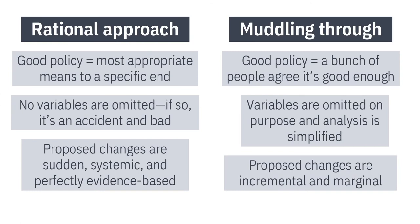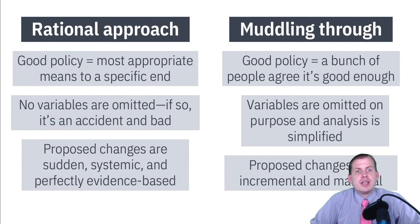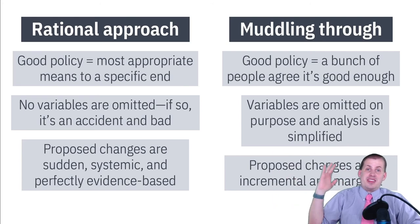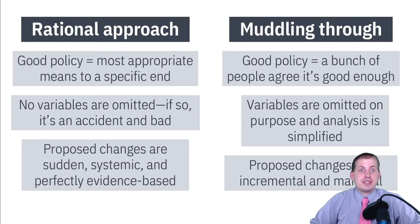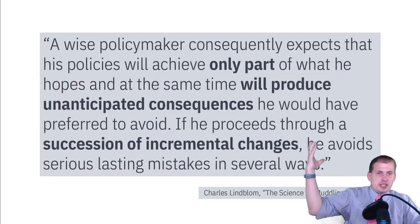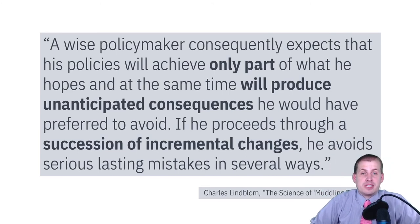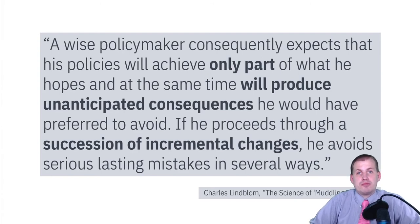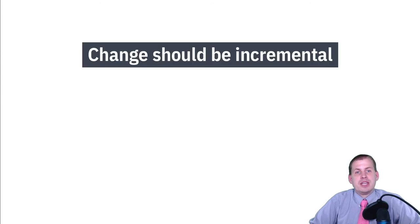In the muddling through world, policy changes are incremental and marginal — you get slow changes. This actually fits better with the view of institutional change we've been teaching. If you're locked into some institutional arrangement because of path dependency and history, it's really hard to suddenly come in with a sweeping change to the entire system at once. But through muddling through you can get there. The key takeaway from the article is that any policy you introduce will only achieve part of what you're trying to do and will produce unintended consequences — but a succession of incremental changes leads to better policy impact.